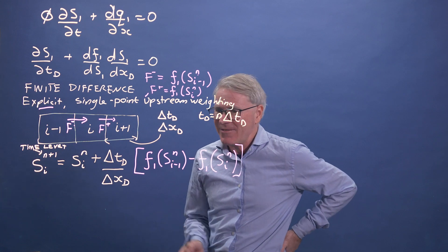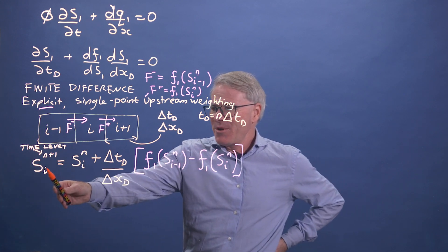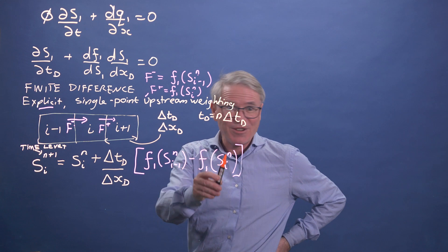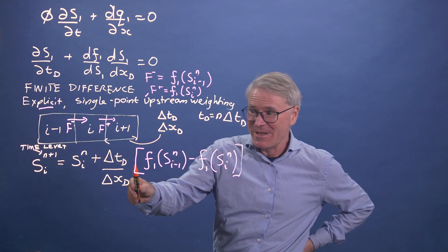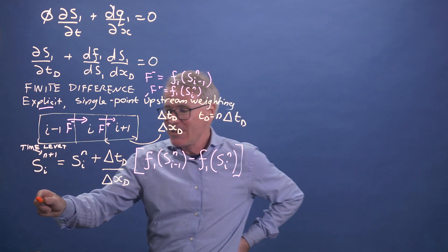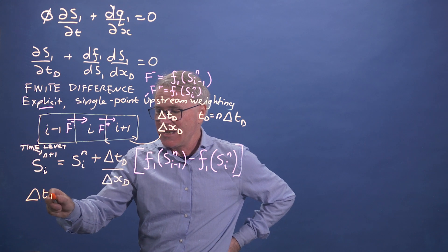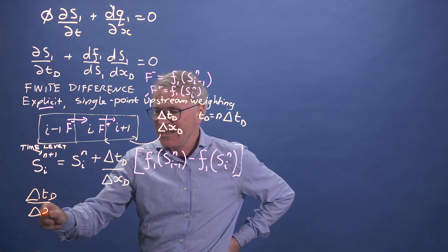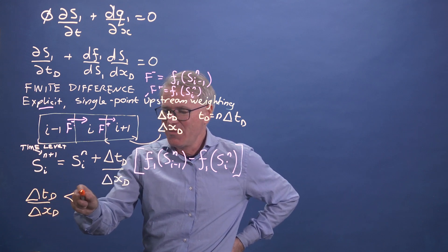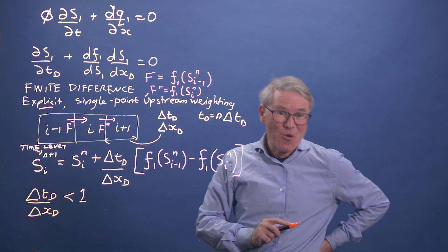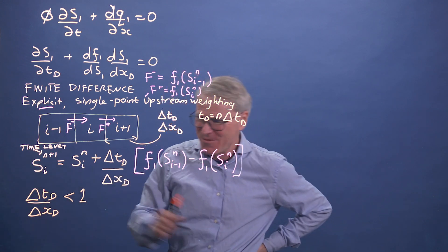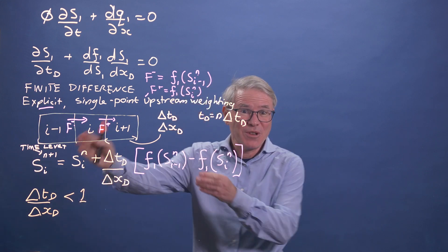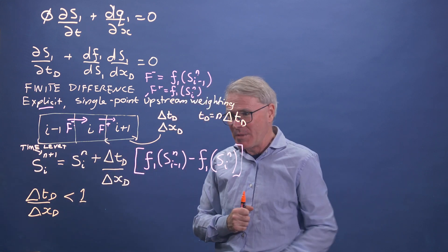So it's a relatively straightforward solution. There's only one thing to bear in mind. If you look at this, if we're not careful, we can get saturations that are greater than one. Because if we make TD too large, so we normally need to make delta TD over delta XD less than one. And normally, don't make it close to one.